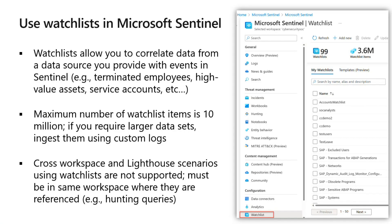Moving on to watch lists. Watch lists allow you to correlate data from a data source you provide with events being ingested into your Sentinel environment. For example, you might create a watch list with a list of high-value assets — machines with sensitive data, machines run by people with high privileges, machines run by people in the C-suite. Whenever something shows up in a log related to those high-value assets, you want to know about it.